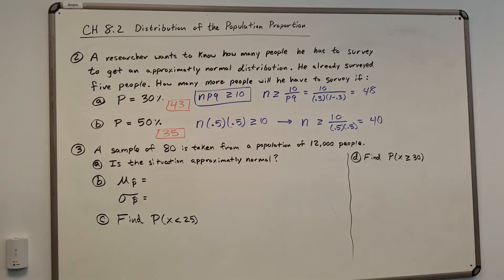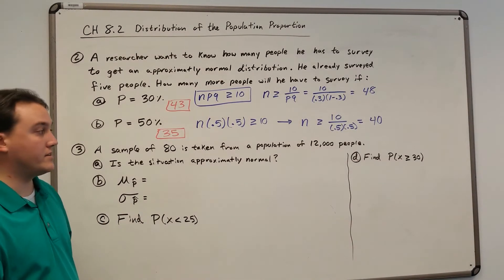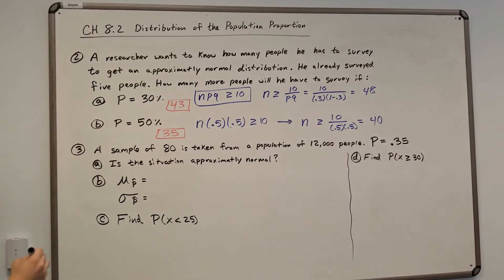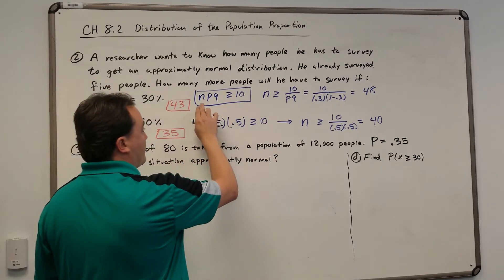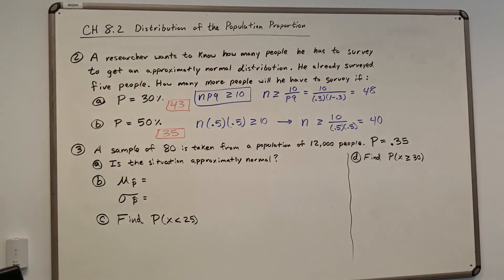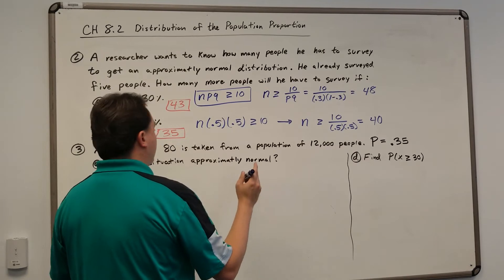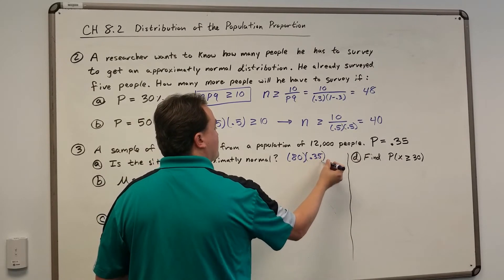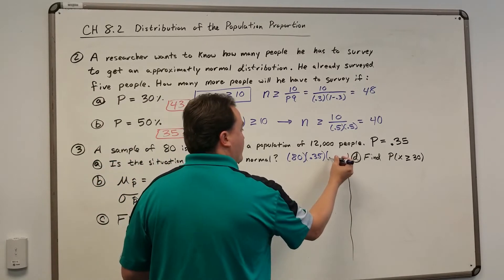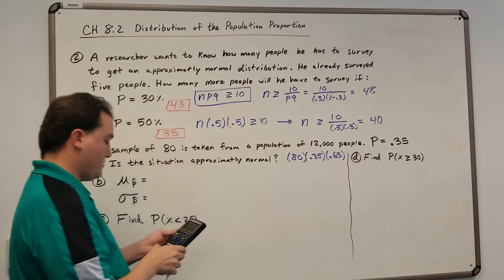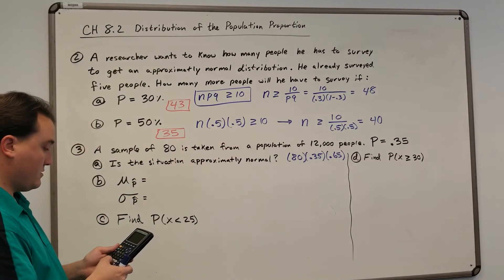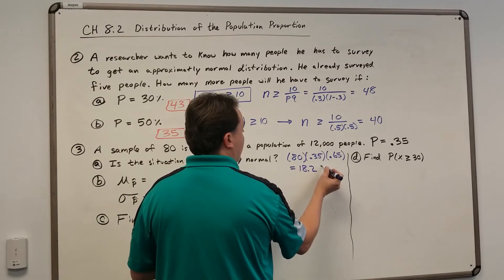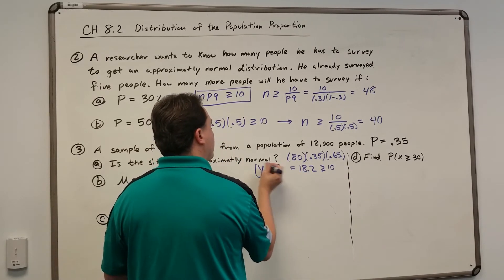For the last problem: a sample of 80 is taken from a population of 12,000 people, with P equal to 0.35. First, is the situation approximately normal? We use the condition NPQ ≥ 10. Plugging in: 80 times 0.35 times 0.65 — since Q is 1 minus 0.35 — equals 18.2, which is greater than or equal to 10. So the answer is yes, it is approximately normal.